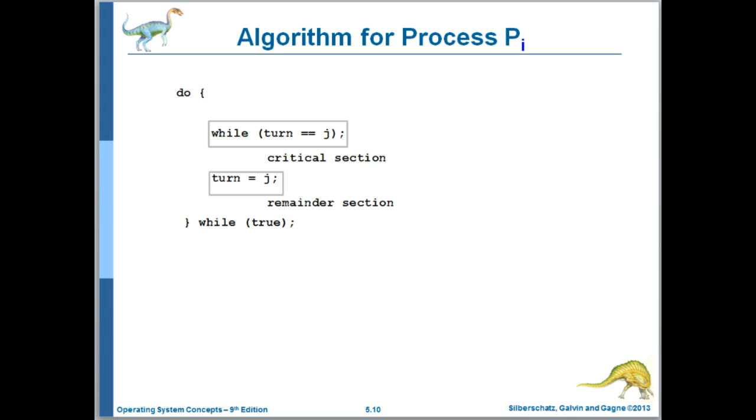So if PI, for example, were making progress much more quickly than PJ, it couldn't enter its critical section twice consecutively, even if PJ was not intending to enter its critical section at all. And that's a shortcoming here that we'll address in the next slide.